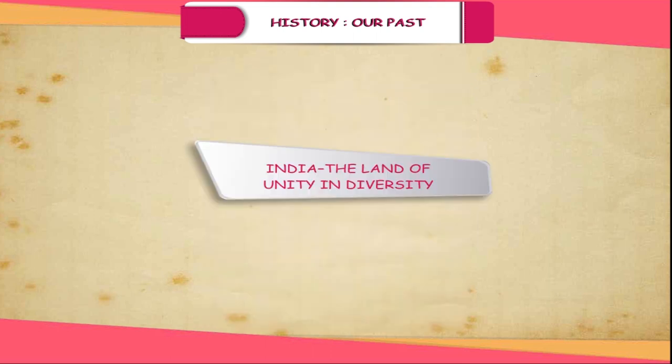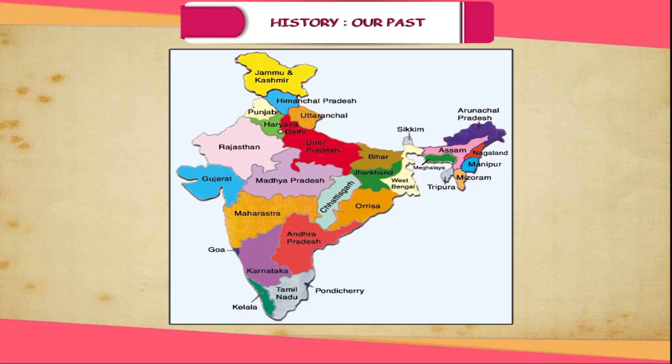After independence, many provinces have been recognized, and some new states have come up on the basis of linguistic and cultural similarity of the people of the area, so that regional language may flourish and administrative work may be done in the mother tongue. It is said that India presented a picture of unity in diversity.